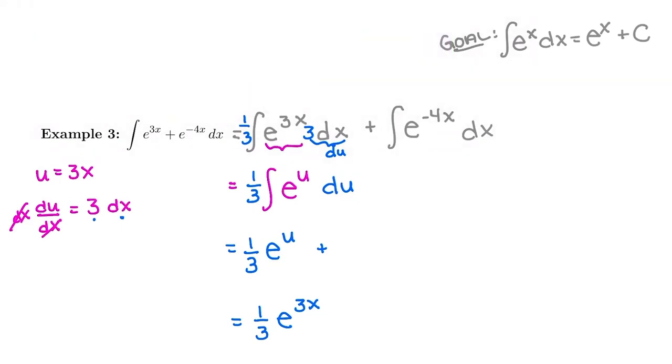Now we're going to do the second part of the u-sub, which is working with this term here. So for this term, u is going to be the exponent again. So u is going to be negative 4x. The derivative of that, du dx, is just going to be negative 4. And then we're going to multiply both sides by dx.